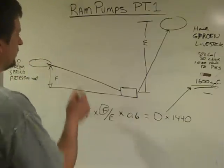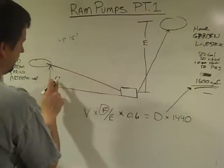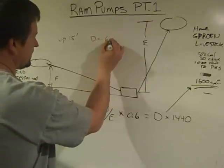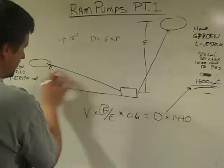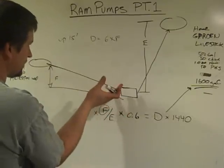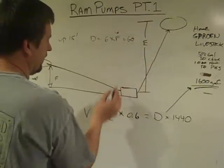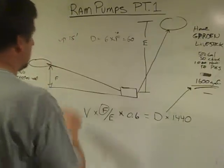Let me tell you some rules of thumb. If you go up to 15 foot of fall, your drive pipe needs to be six times whatever that fall is. So if your pump is 10 foot below your source, then if this was 10, then you would have 60 foot of drive pipe. Yes, 60 foot. Drive pipes are typically long.